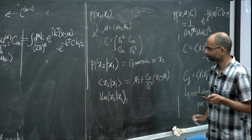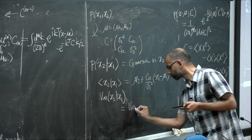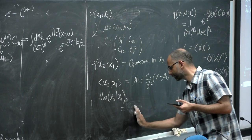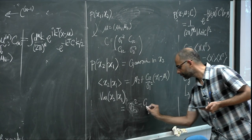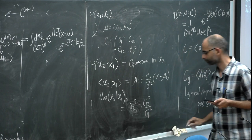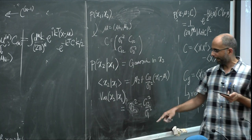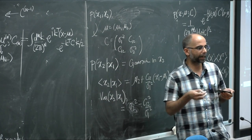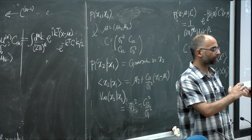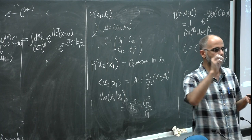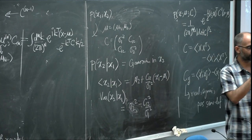This is nice to interpret: if x₁ and x₂ are correlated, knowing the value of x₁ reduces the uncertainty in x₂. The variance decreased from σ₂² by an amount proportional to the square of the off-diagonal covariance C₁₂. The amount by which uncertainty decreases is exactly given by the correlation between x₁ and x₂.